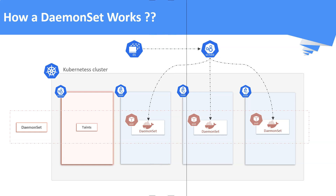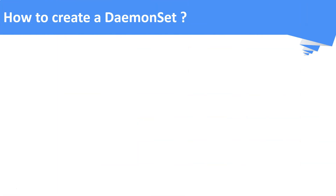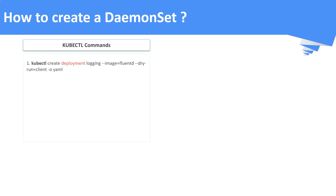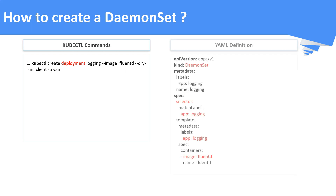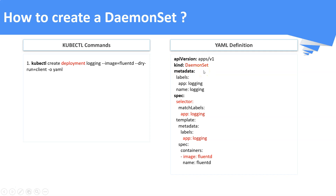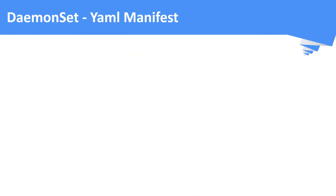There is no direct kubectl command to create a DaemonSet. We have to create it using a deployment manifest. Once you execute the command, it will create a deployment YAML manifest. Then you modify that manifest to create a DaemonSet object instead of a Deployment — specifically, the kind should be DaemonSet instead of Deployment. Finally, apply the DaemonSet definition to create it in the cluster. We will do this practically in our demo.